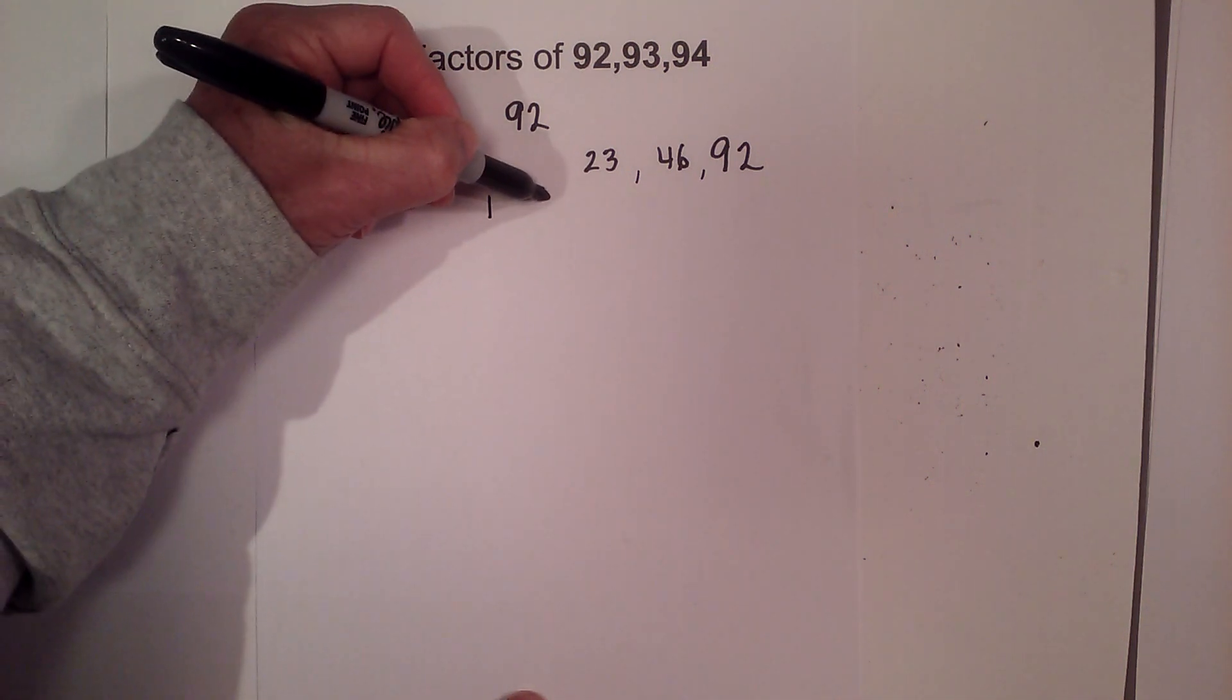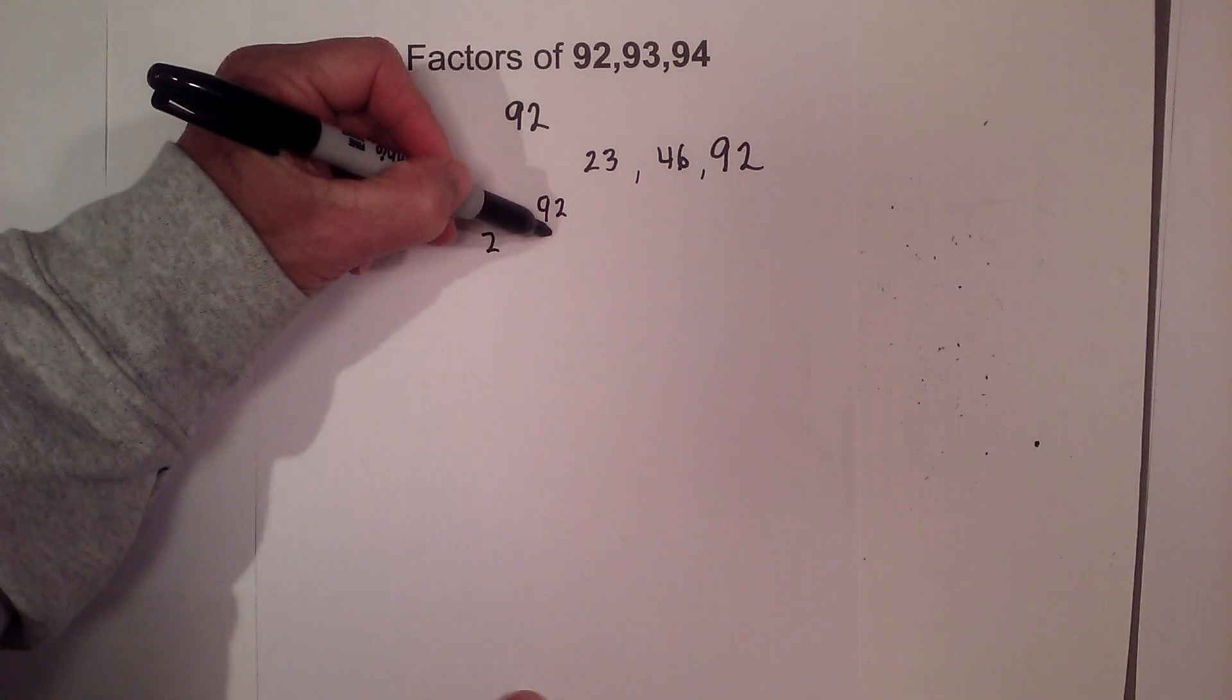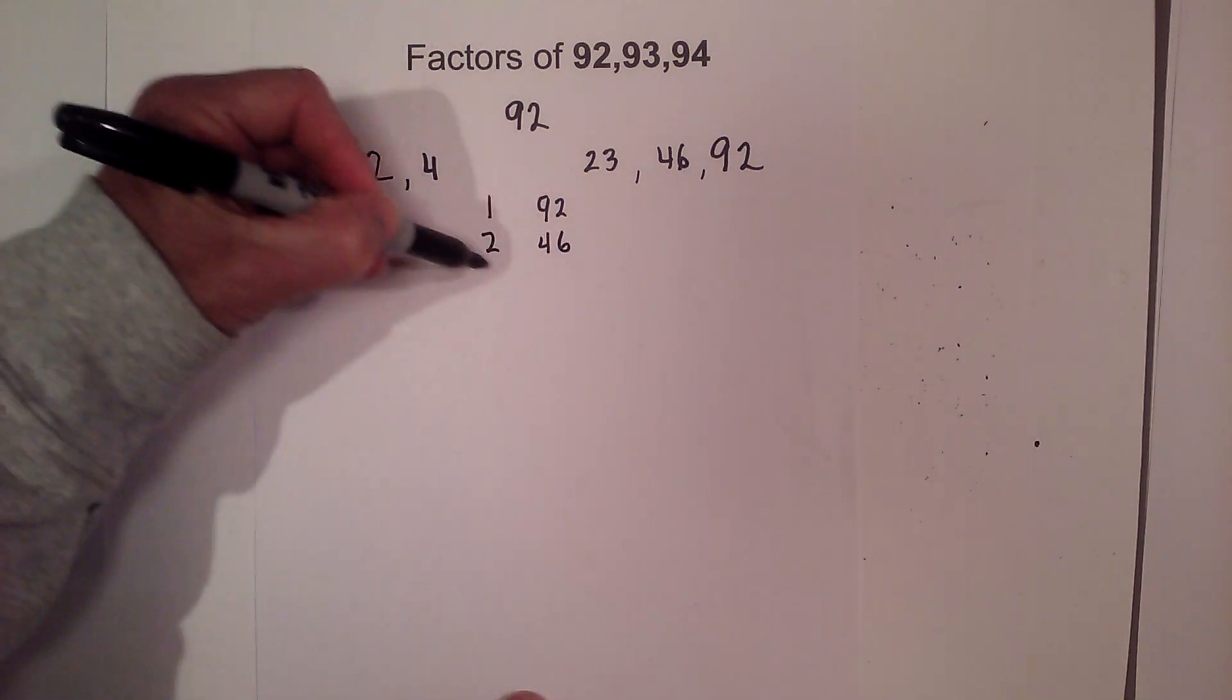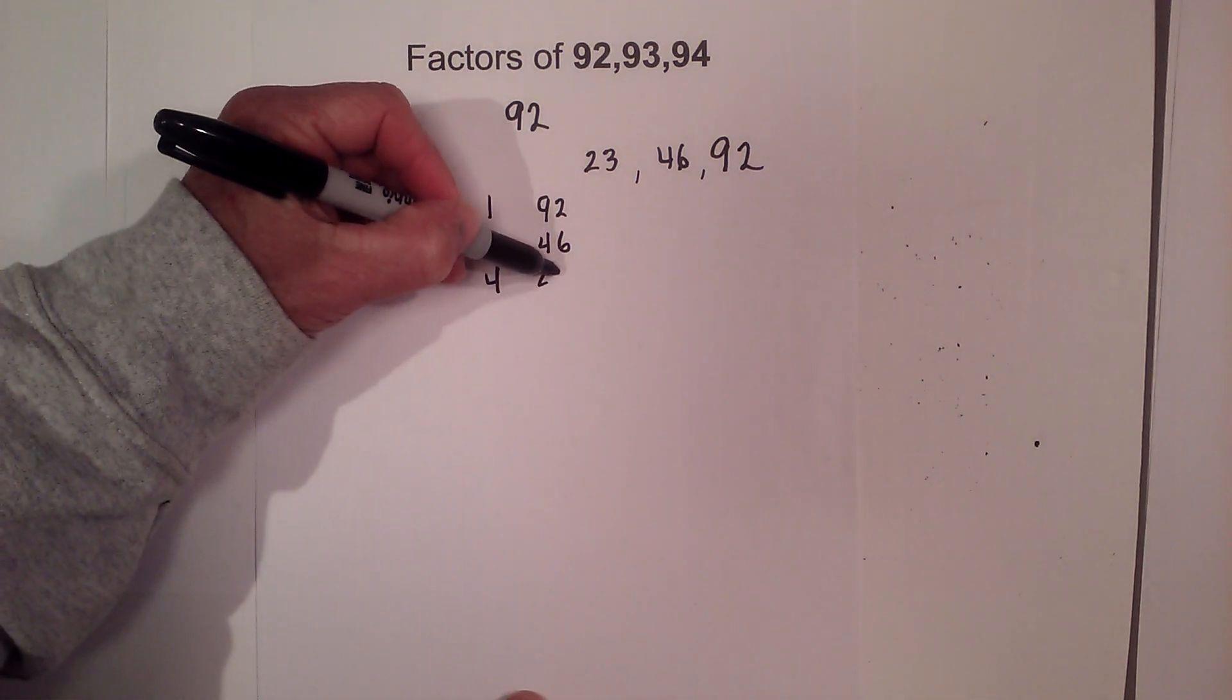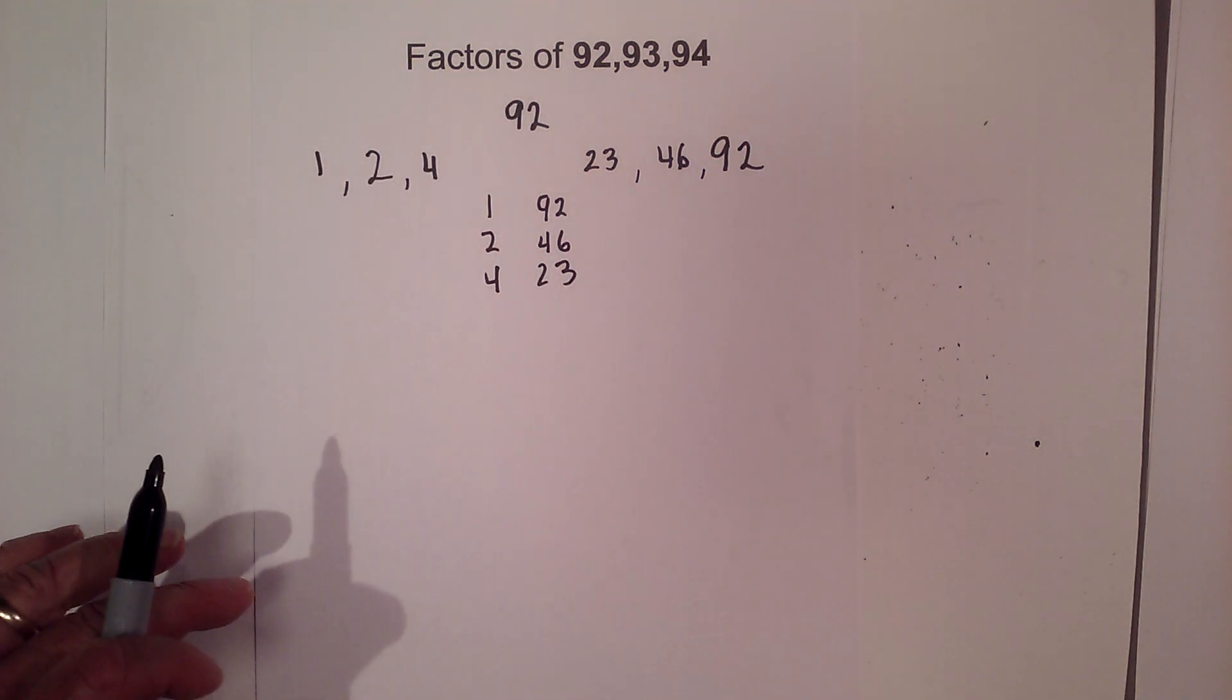And that's 1 times 92 if you would like them in pairs, 2 times 46, and 4 times 23. And also 92 is a composite number.